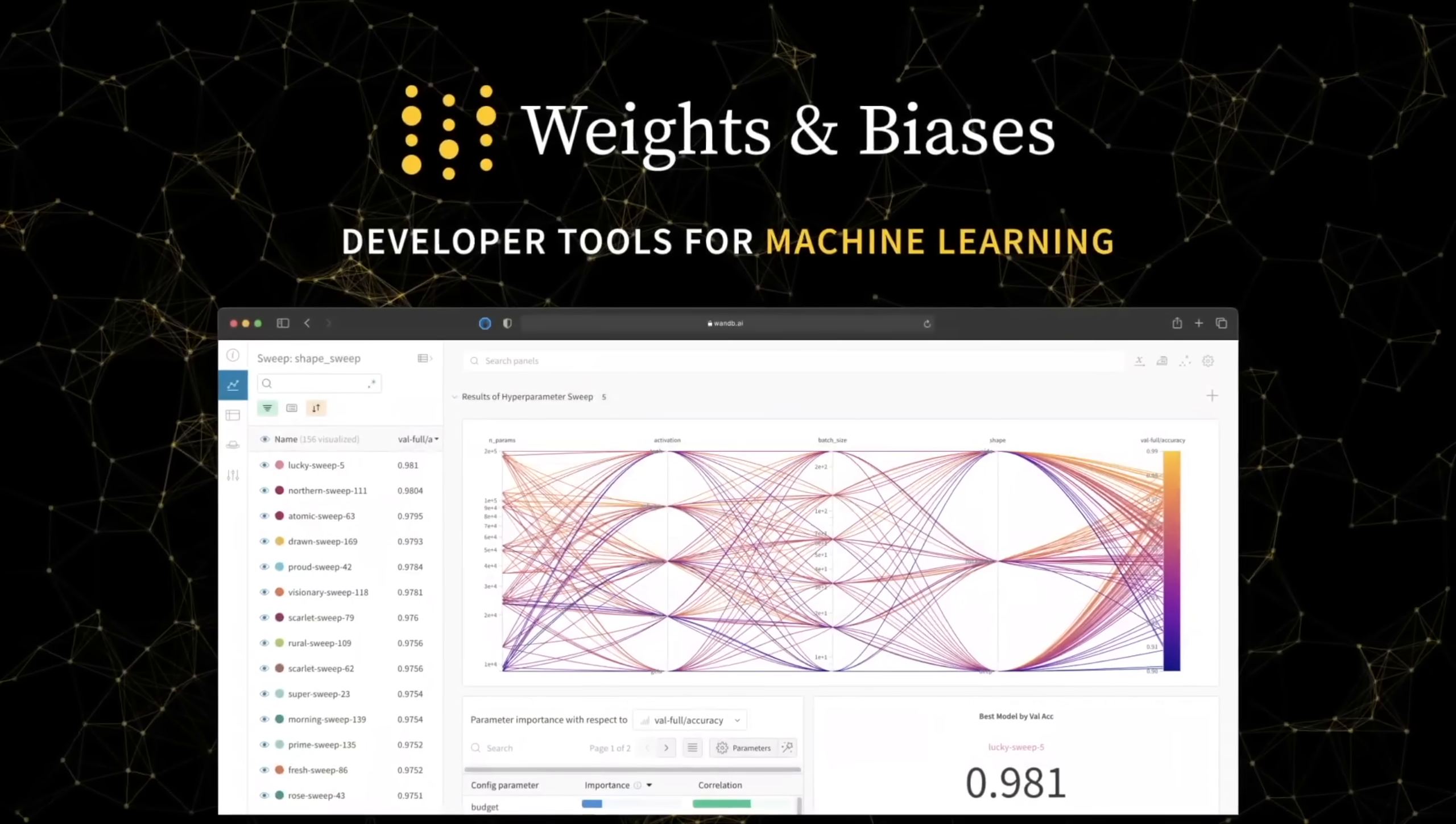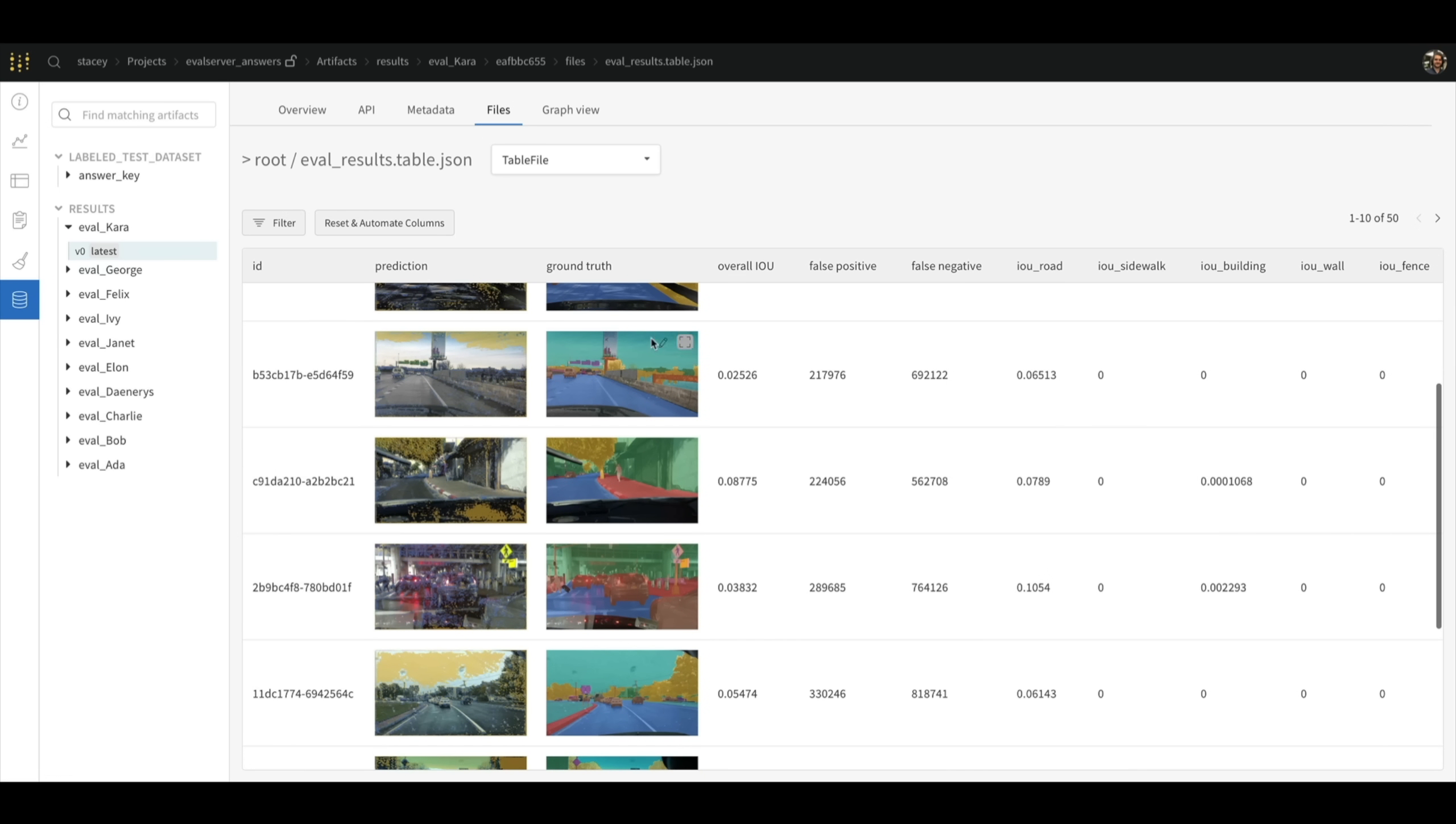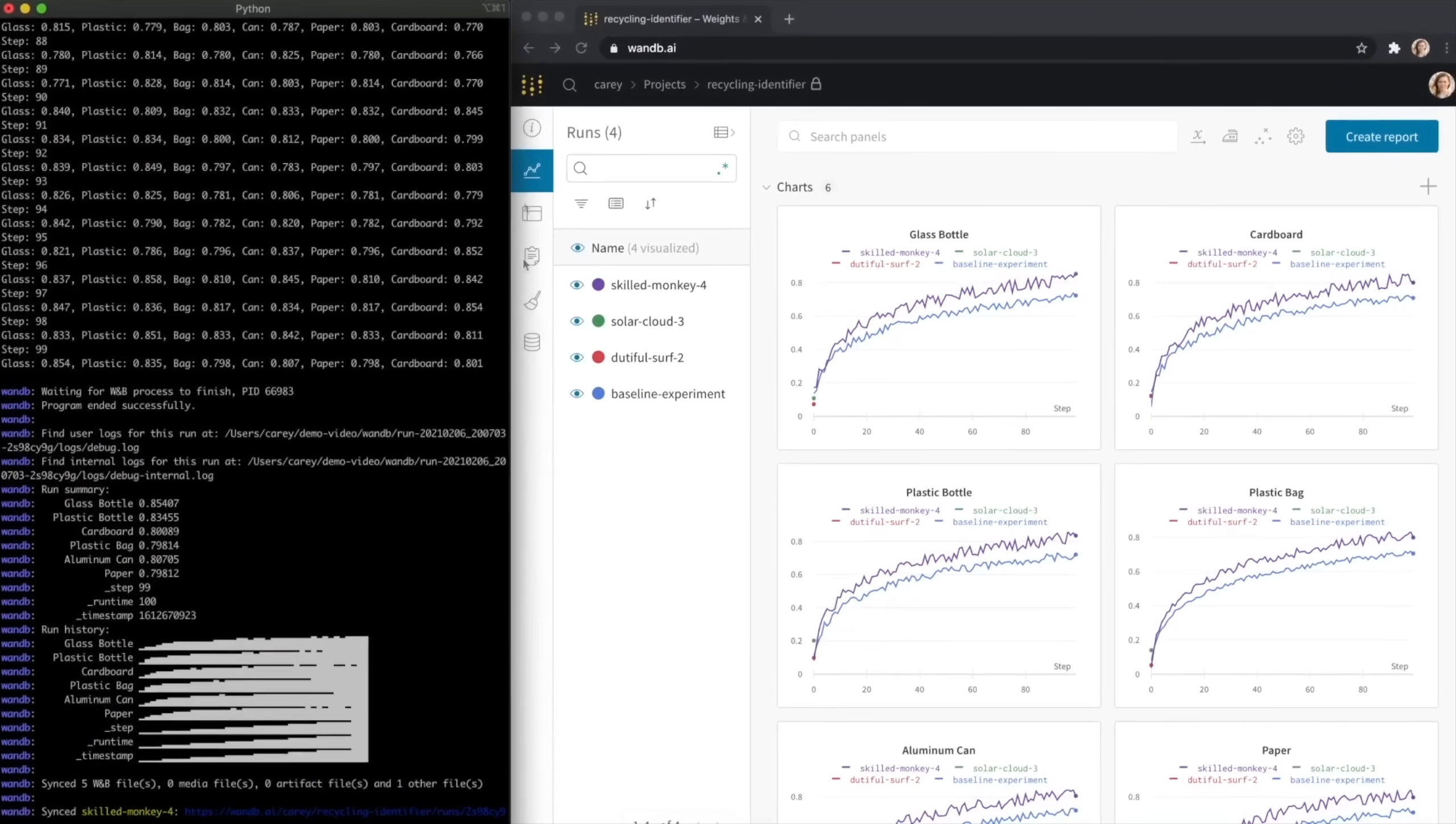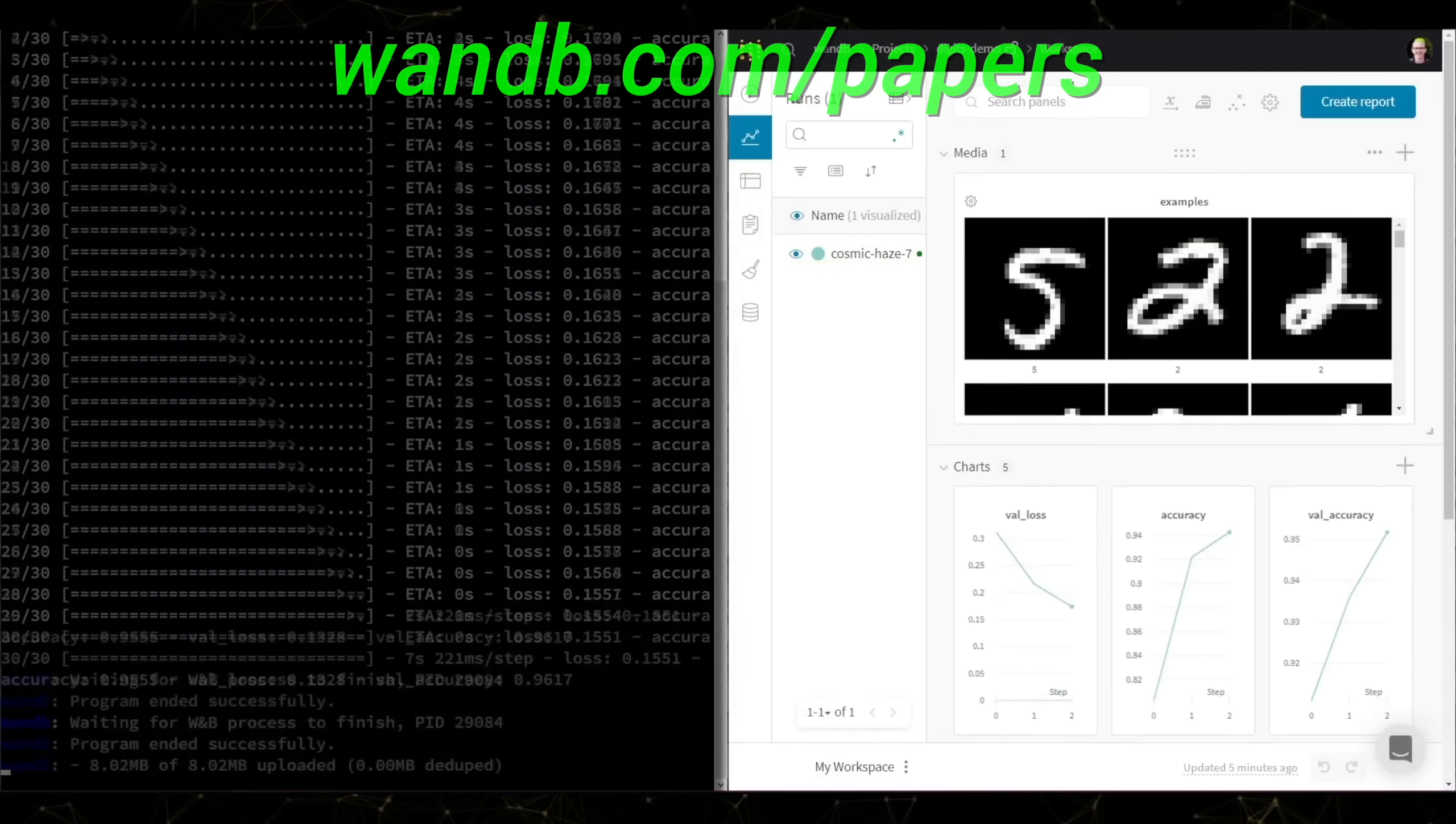Weights and Biases provides tools to track your experiments in your deep learning projects. What you see here is their tables feature, and the best part about it is that it is not only able to handle pretty much any kind of data you can throw at it, but it also presents your experiments to you in a way that is easy to understand. It is used by many prestigious labs, including OpenAI, Toyota Research, GitHub, and more. And the best part is that Weights and Biases is free for all individuals, academics, and open source projects. Make sure to visit them through WNB.com slash papers or just click the link in the video description and you can get a free demo today. Our thanks to Weights and Biases for their longstanding support and for helping us make better videos for you.